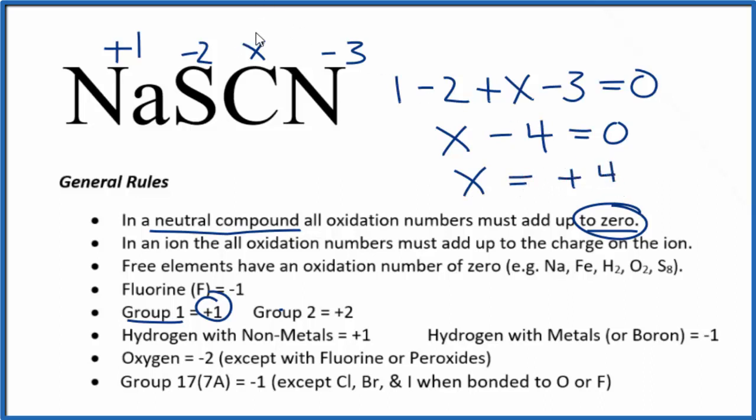So the oxidation number on the carbon here is going to be plus 4. These are the oxidation numbers for each element in NaSCN. This is Dr. B, and thanks for watching.